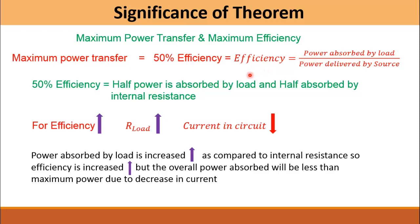In other words, when the load resistance increases, more power is dissipated in the load than in the source impedance, and therefore the overall efficiency — or the operational efficiency — is increased. But the magnitude of the overall power is decreased.